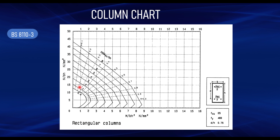If you also look at the chart, you'll see dashed lines representing values of k — k equals 0.1, 0.2, 0.3, up to k equals 1. These dashed lines are used for the design of slender columns, which we will not cover in this video. You can check out my next video on design of slender columns using the column chart.